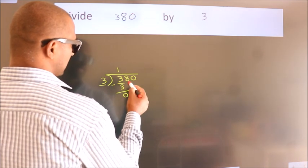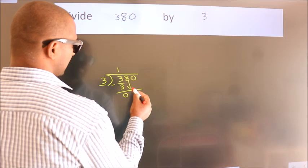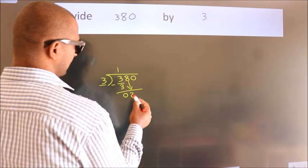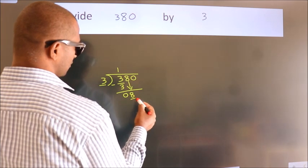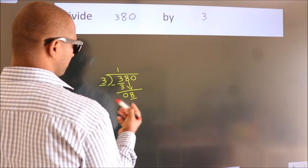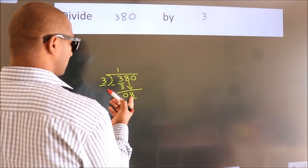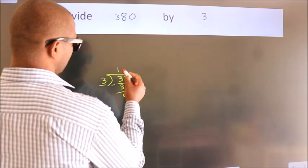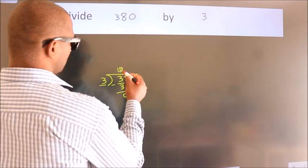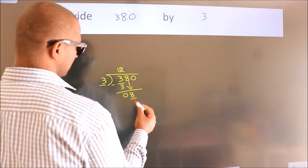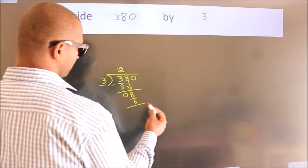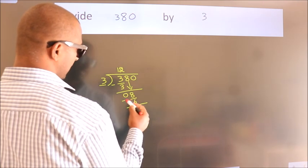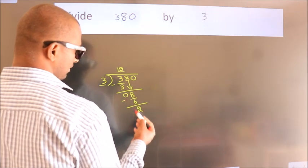After this, bring down the beside number. So 8 down, so 8. A number close to 8 in the 3 table is 3 twos, 6. Now we subtract. We get 2.